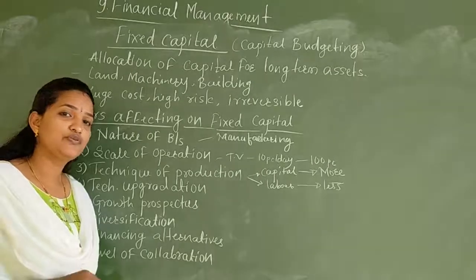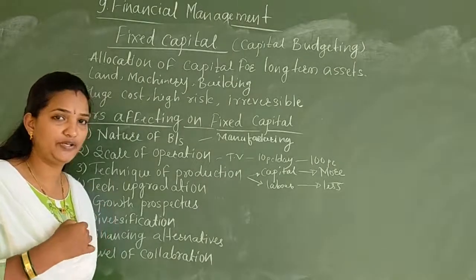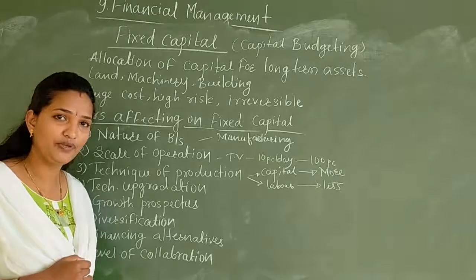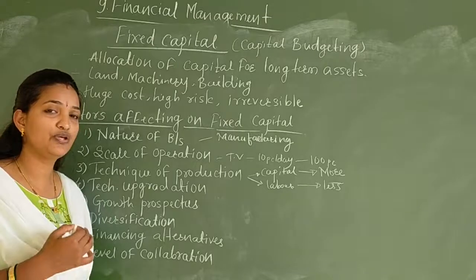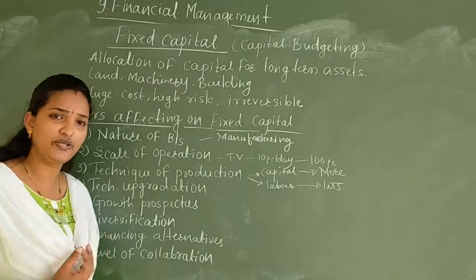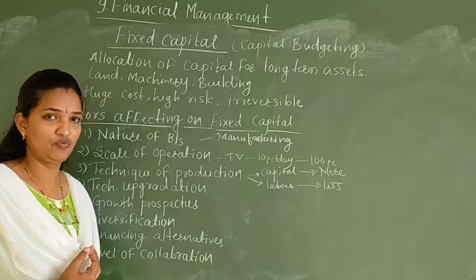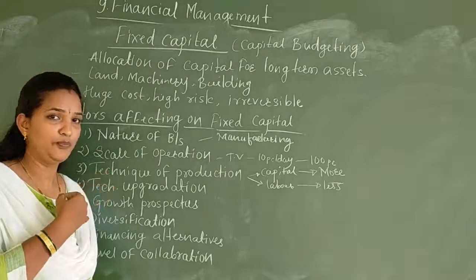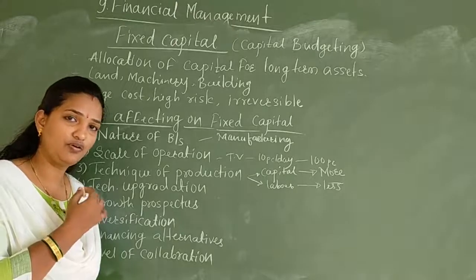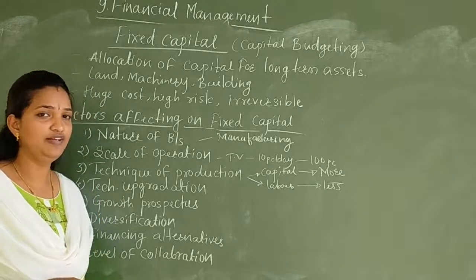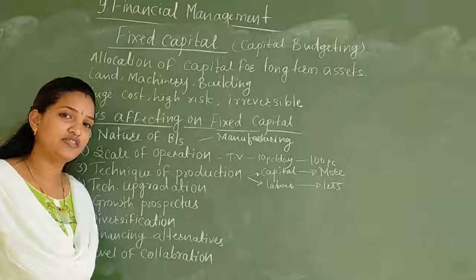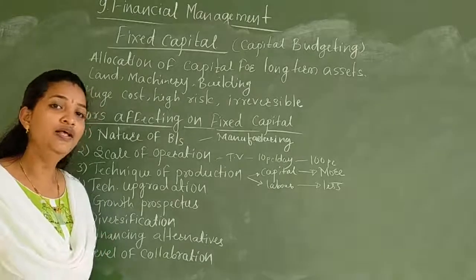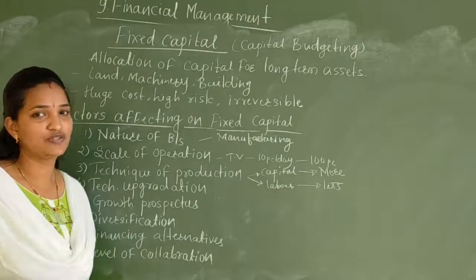The eighth factor is the level of collaboration. If you enter into a joint venture with another company, you can use the resources, machinery, and buildings of that other company. So rather than purchasing new machinery, you use the other company's assets. In that case, less fixed capital is required. These are the eight factors affecting fixed capital. I hope you got a clear concept of what fixed capital means and what factors affect it.